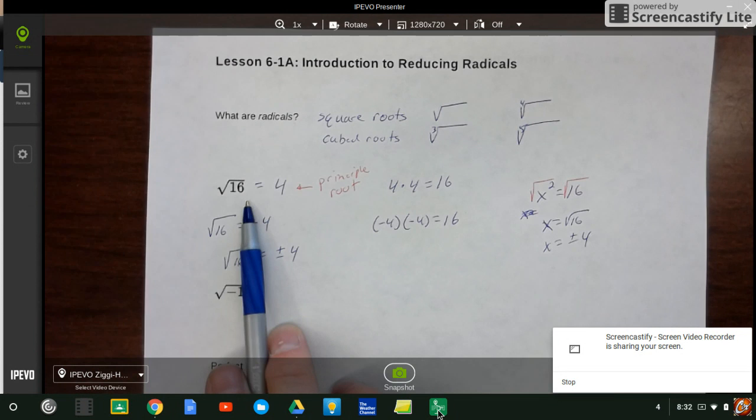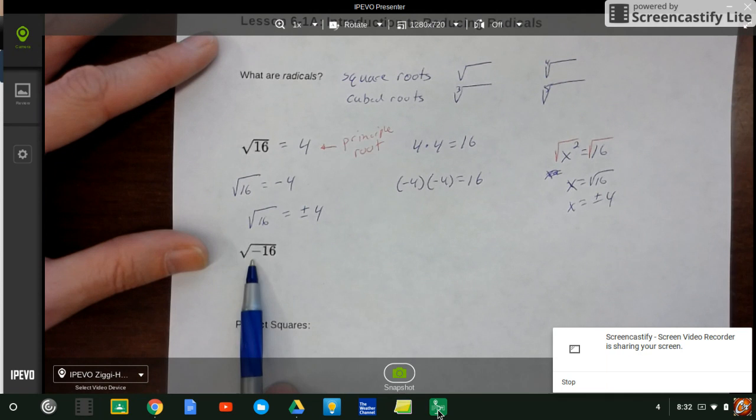That's the only time we really use that positive or negative. If I'm just trying to find the answer for the square root of 16, I'm going to use 4.